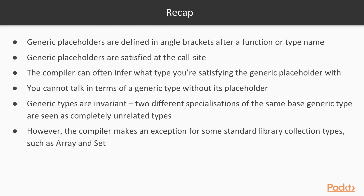To recap: generic placeholders are defined in angle brackets after a function or type name, and are then satisfied by an actual type at the call site. The compiler can often infer what you're satisfying the generic placeholder with — for example when initializing a generic type by passing in an argument of the placeholder type. You cannot talk in terms of a generic type without its placeholder. And finally, generic types are invariant — two different specializations of the same base generic type are seen as completely unrelated types — however the compiler makes exceptions for some standard library collection types such as Array and Set.